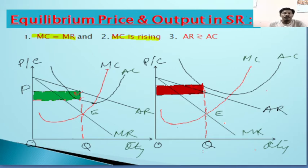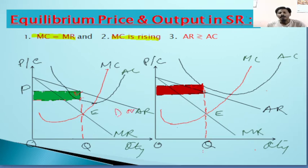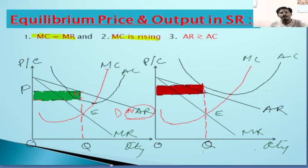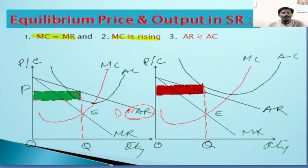Since average revenue is represented by the demand curve, the demand curve coincides with the average revenue curve. The AR curve is therefore downward sloping. Because with a fall in average revenue, marginal revenue also falls but at a greater rate, MR always lies below the average revenue — meaning AR is always greater than MR.